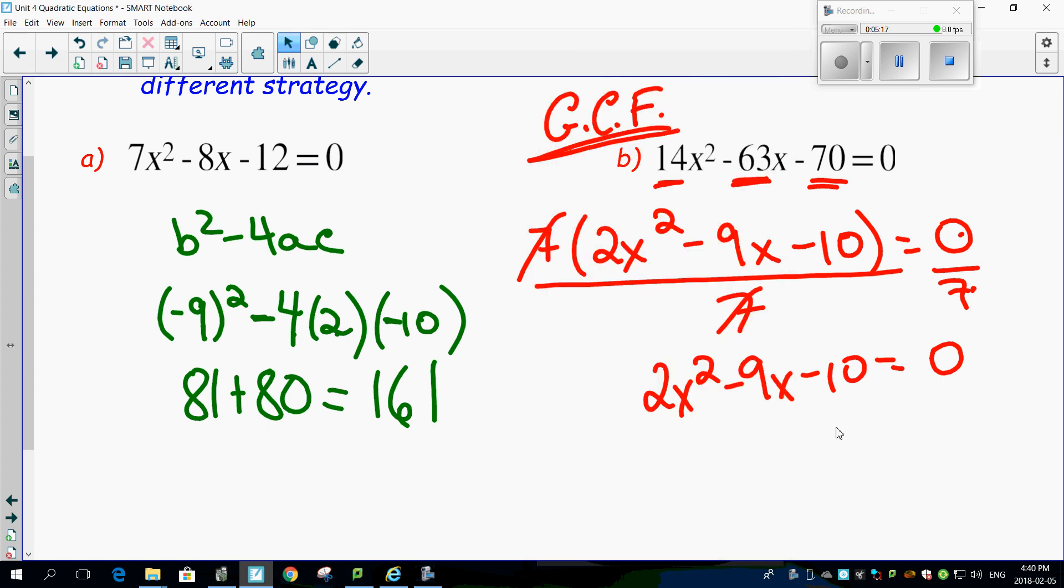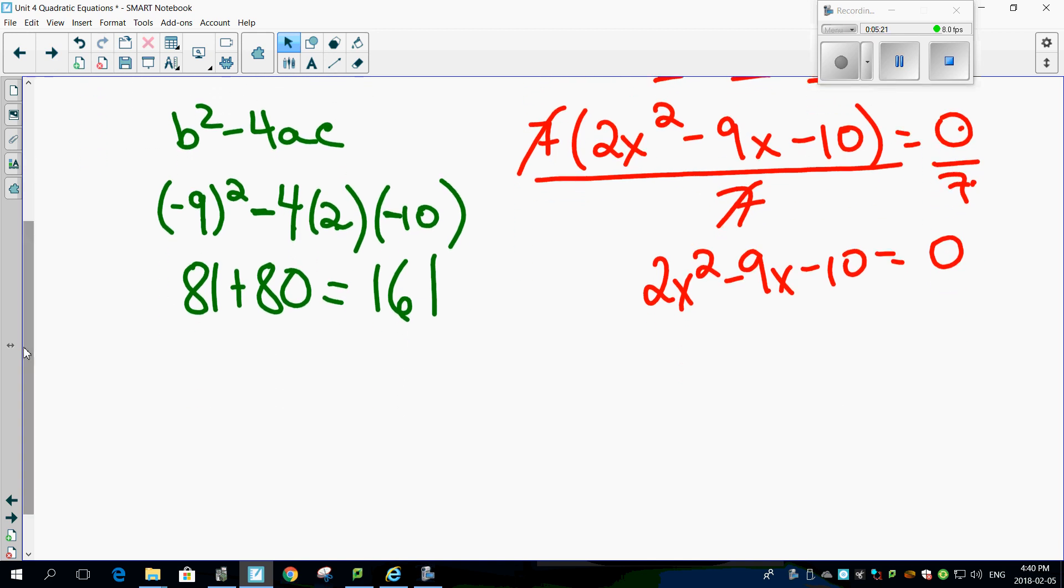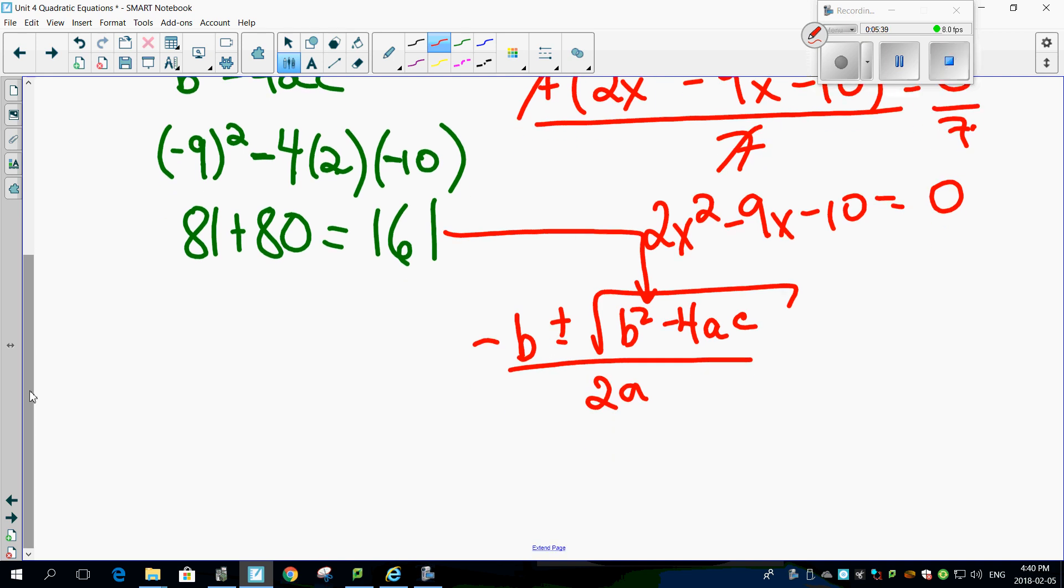So knowing that, then, we can continue on with using the discriminant, but now with the quadratic equation. So the quadratic equation, minus B, plus or minus the square root of B squared, minus 4AC over 2A. And we know that the discriminant is 161. So all we have to do is substitute it back in there. Minus B.